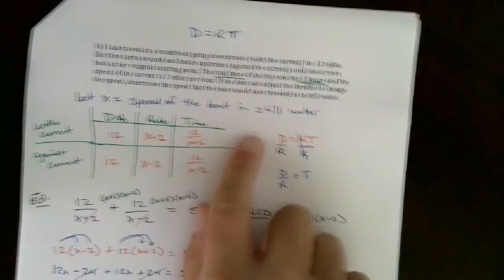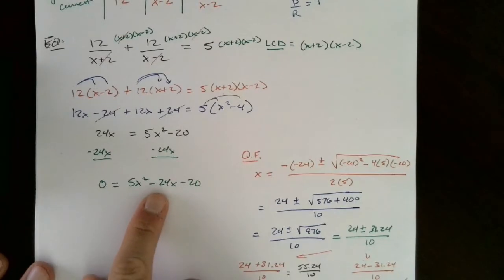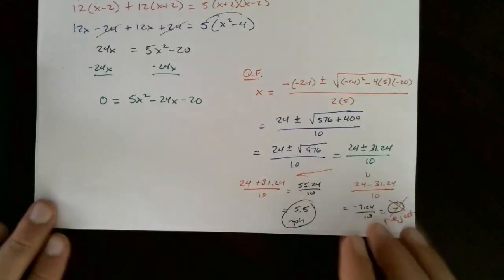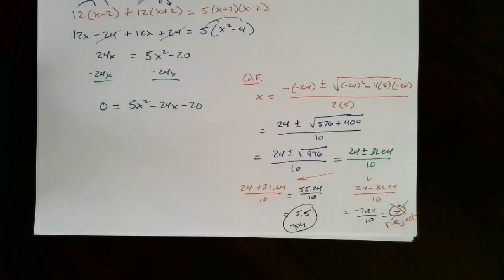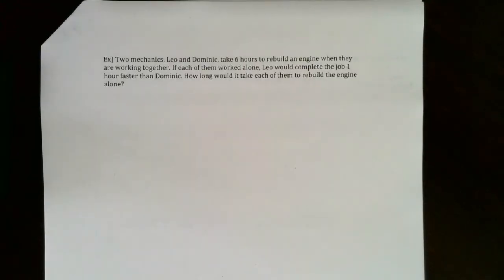Everything in this problem we've seen before - the only new part is when we solve, we use the quadratic formula. Let's look at one more word problem. Two mechanics, Leo and Dominic, take six hours to rebuild an engine when working together. If each worked alone, Leo would complete the job one hour faster than Dominic. How long would it take each of them to rebuild the engine alone?